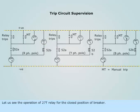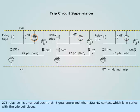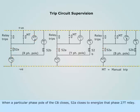Let us see the operation of 27T relay for the closed position of the breaker. The 27T relay coil is arranged such that it gets energized when the 52A NO contact, which is in series with the trip coil, closes. When a particular phase pole of the CB closes, 52A closes to energize that phase's 27T relay.